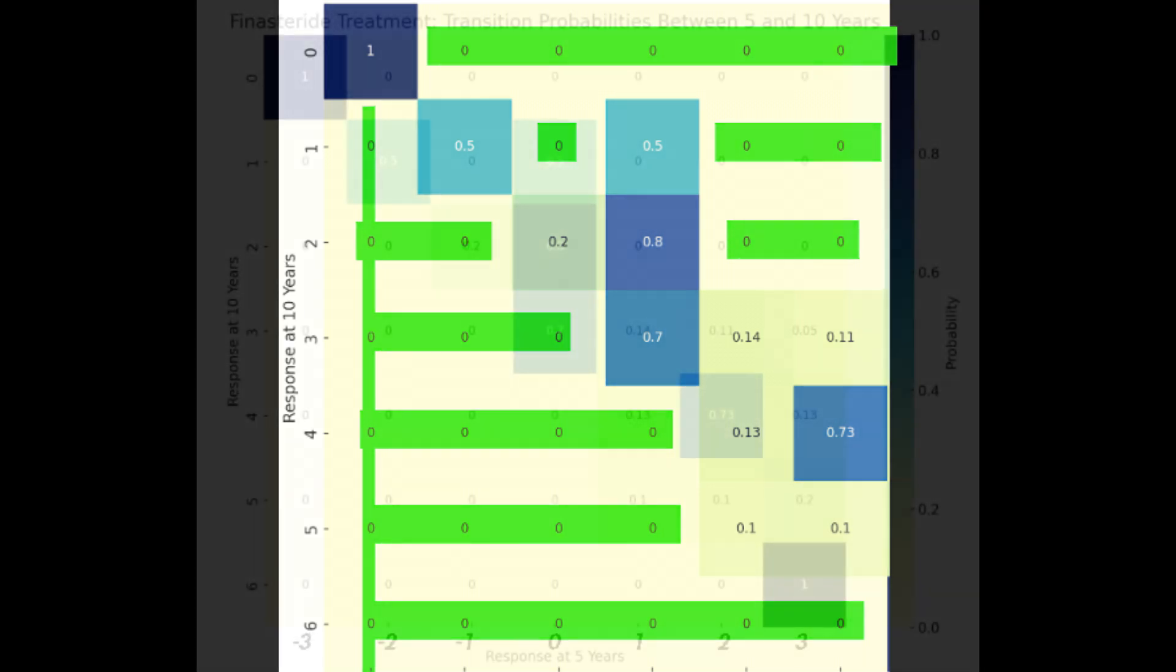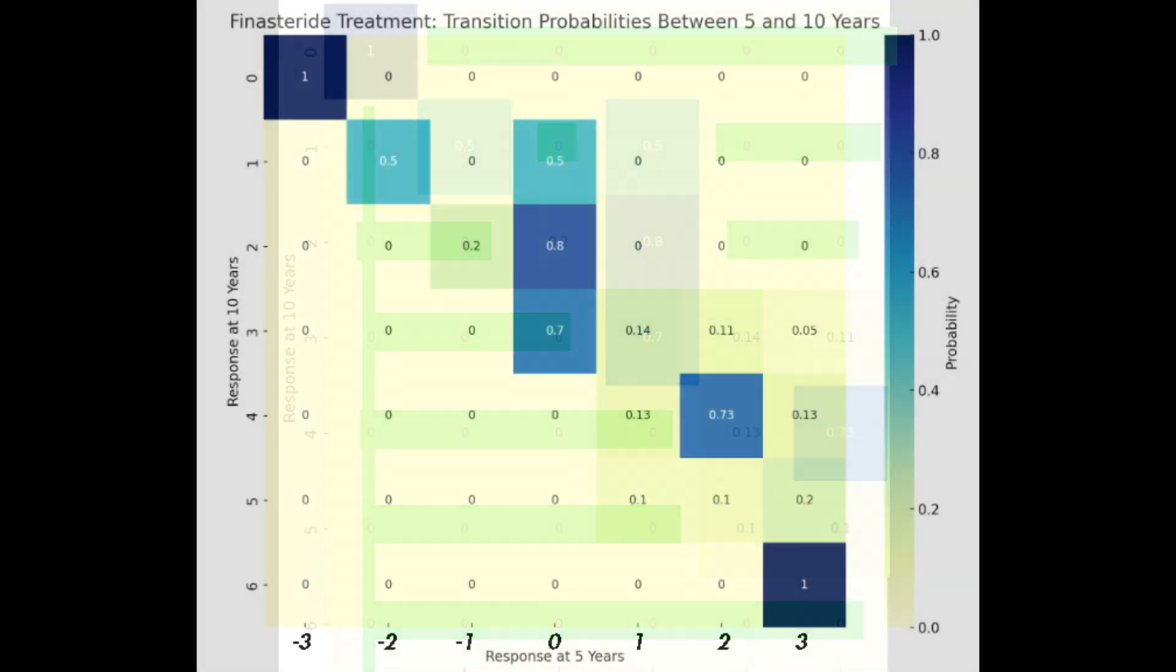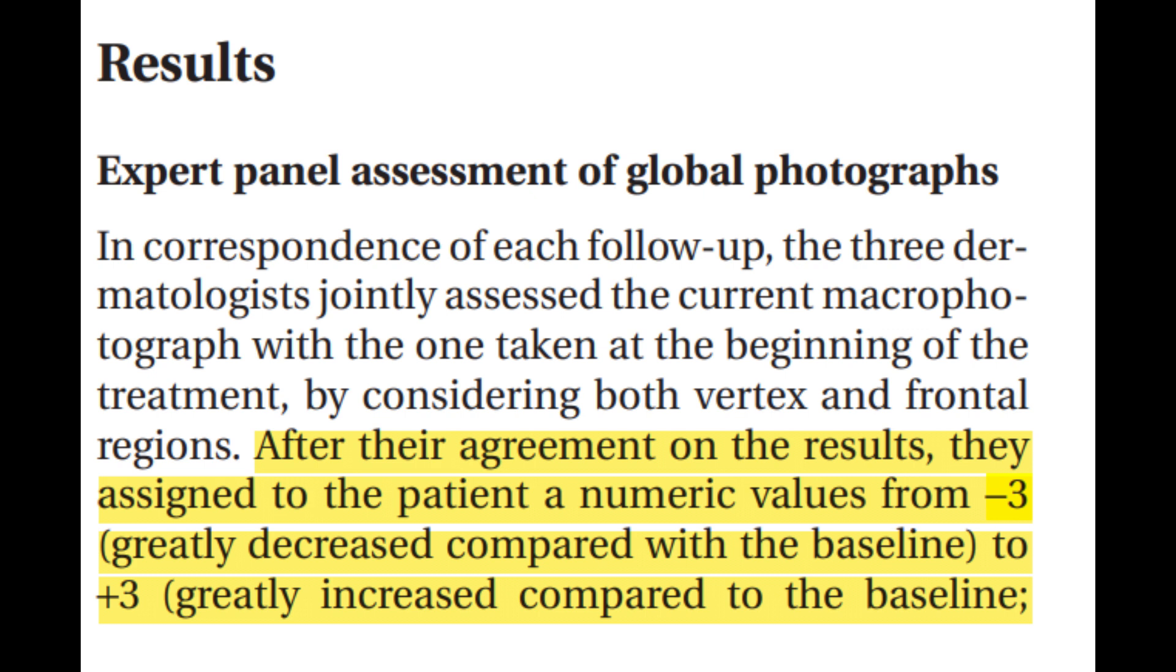Looking at the horizontal axis, we have the response at the 5th year mark, values ranging from negative 3 to positive 3. Negative numbers indicate worsening of the hair growth according to the researchers and how they rank them, while positive numbers indicate improvements.